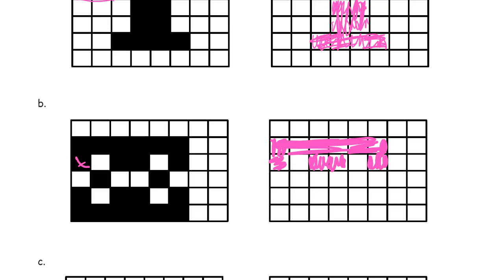Now I'm looking at this row. So I'm going to skip 1, color 1, skip 2 — these 2 here — and color 1. Then that's it for the row.